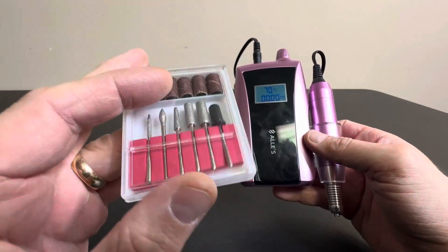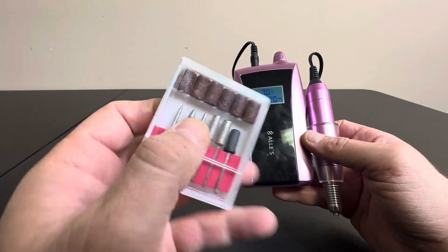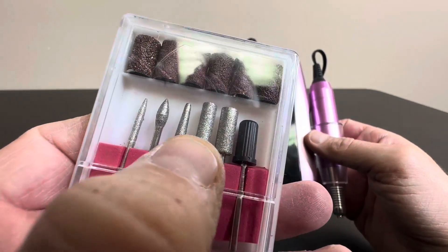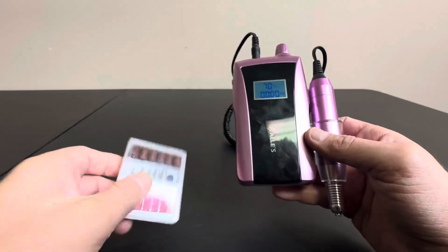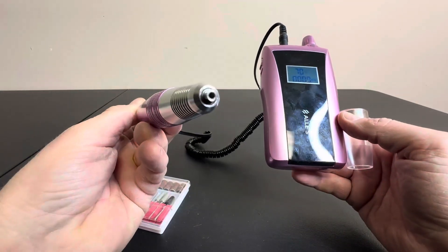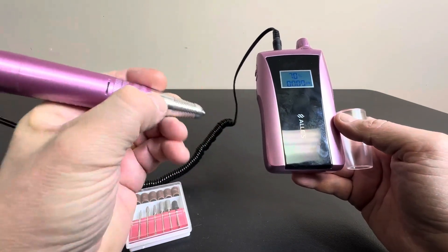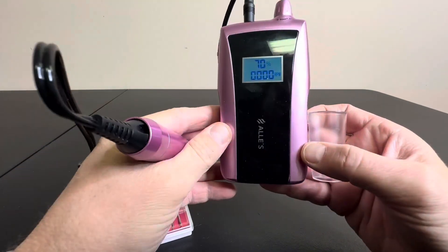It does come with this set, so you have a couple different sanders and different tips that are going to help you grind down those nails or drill them. As you can see here, you simply place them in here and this will spin. You hold it just like a pencil and you can do really detailed work.